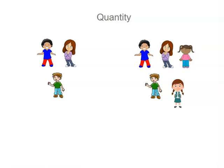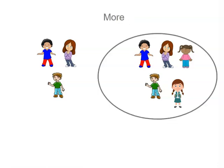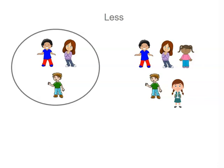Quantity is a little different. It's not the size, but it's how many in each group. That group has more people than the other group. That group that's circled has less people than the other group.